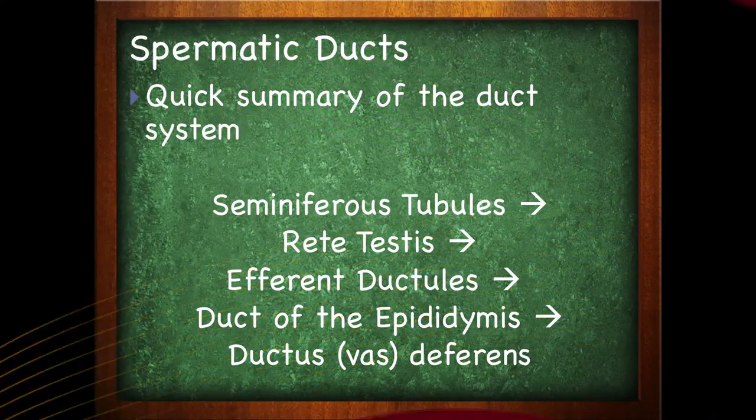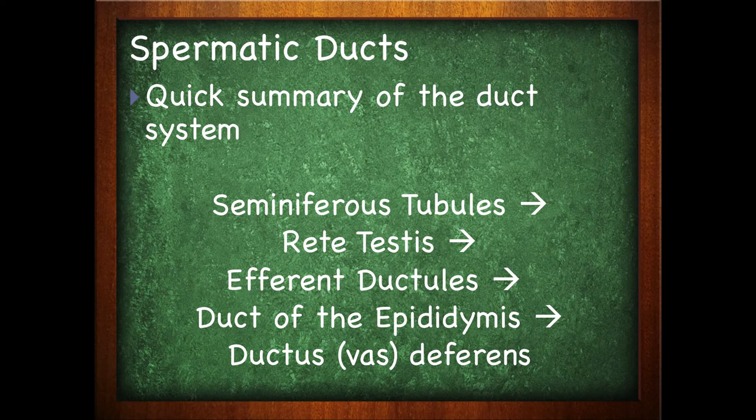The spermatic ducts are where we find sperm production. Sperm is created and moved through a series of ducts out of the scrotum. Note that sperm do not swim until they're actually released from the male. Their entire time inside the male, they're being moved by other forces — they're not moving themselves.